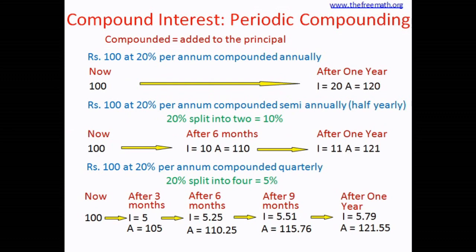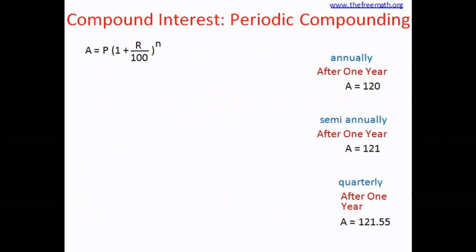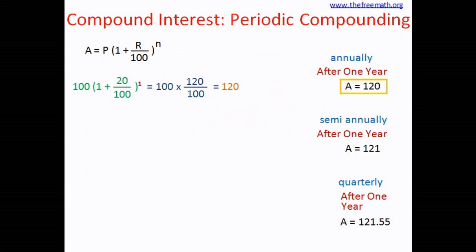Does the regular compound interest formula work here? The formula is A = P × (1 + r/100)^n. Let's check with annual compounding: substituting, it is 100 × (1 + 20/100)^1, which equals 100 × 120/100, which equals 120. This matches what we calculated before.